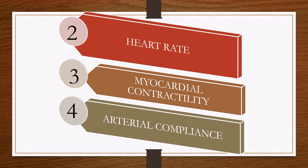Heart rate is the number of heartbeats per minute. If heart rate is high or low, will it lead to high blood pressure or low blood pressure? Myocardial contractility is the ability of the myocardium to contract, or the ability of heart muscles to contract. If contractility is high or low, will it affect blood pressure? Arterial compliance is how easily arteries allow blood to pass through. If arterial compliance is low or high, will it lead to high or low blood pressure? We will determine.